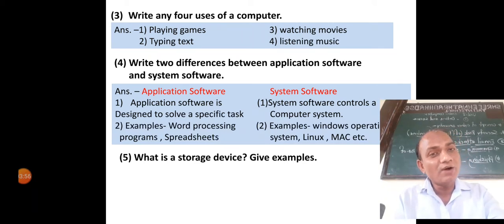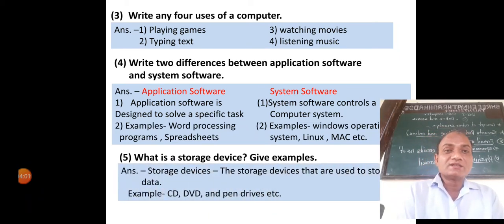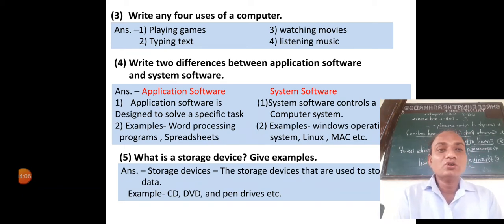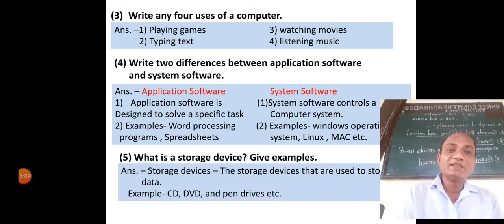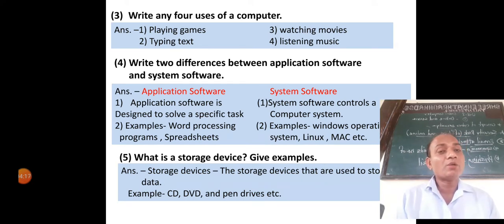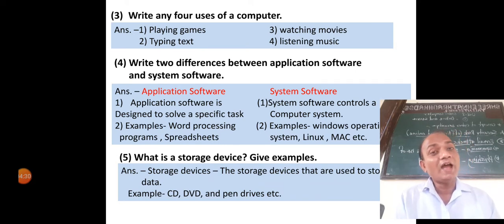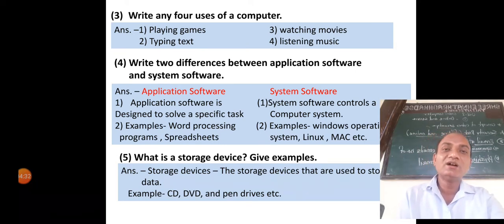The next question: what is a storage device? Give an example. Storage devices are used to store data. A device that can store data or information — like pictures, movies, stories, letters, and typed content — is called a storage device. For example, CD, DVD, and pen drives. These are the storage devices.